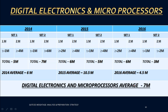Next is Digital Electronics and Microprocessors. The three-year average is about seven marks, and this year you can also expect around six to seven marks from this subject.